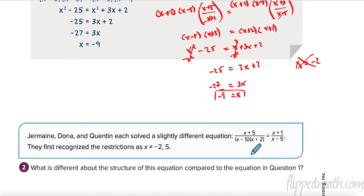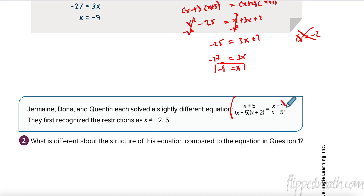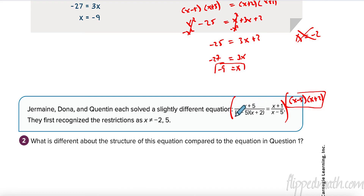Let's go down here. We're not going to solve this one — I just want to identify what we need to multiply by to get rid of the denominators. To get rid of this denominator, I need x minus 5 and x plus 2. The other denominator only needs x minus 5, which I already have. So over here x minus 5 cancels, x plus 2 cancels, and just x plus 5 is left. Over there, x minus 5 cancels and I have x plus 1 times x plus 2. Then you would solve by multiplying out.